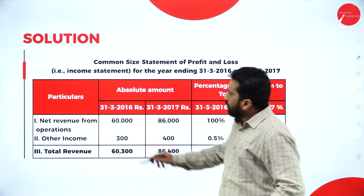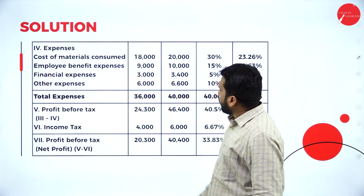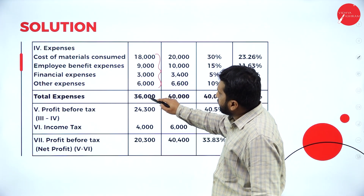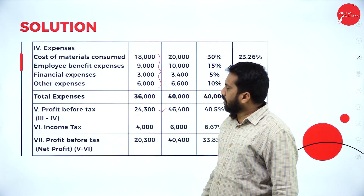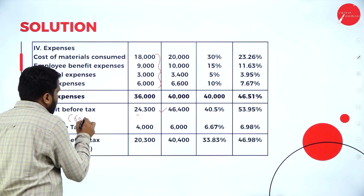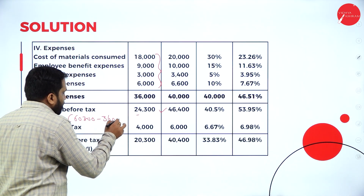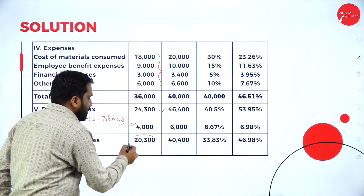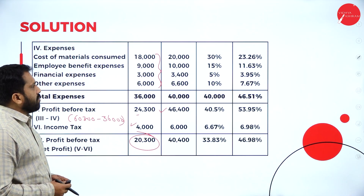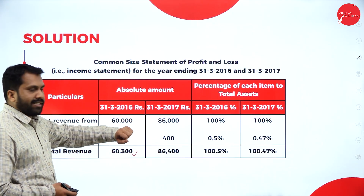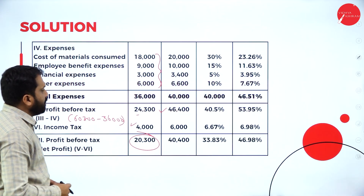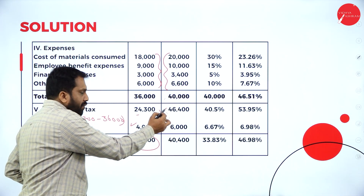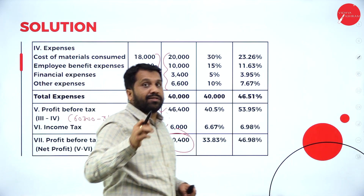I will show you the calculation. 60,000 plus 300 is 60,300. Add all the expenses: 36,000. 60,300 minus 36,000 gives 24,300. From that, minus the tax portion gives 20,300 as your answer. Similarly, for 2017: 86,000 plus 400 total revenue. Minus all the expenses: 40,000. 86,400 minus 40,000 is 46,400. Minus 6,000 gives 40,400 as your net profit for 2017.